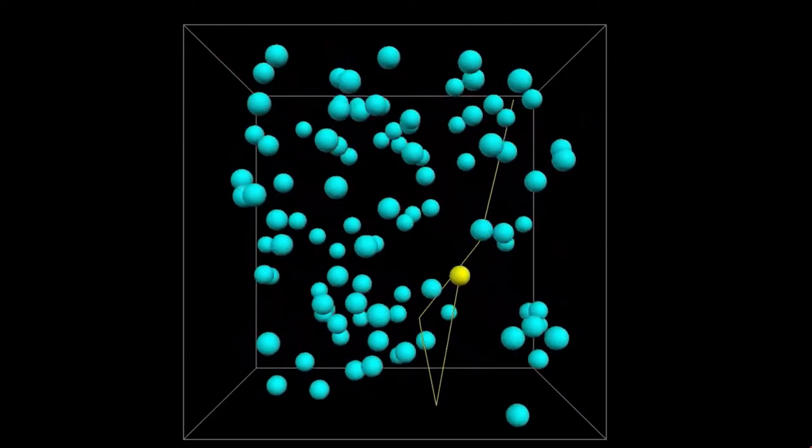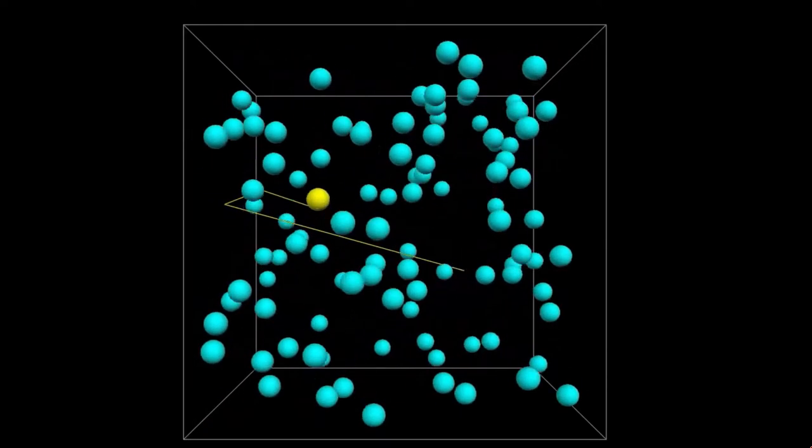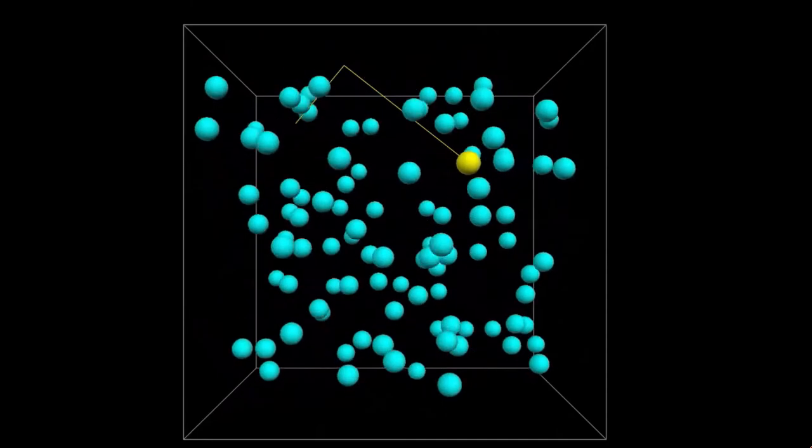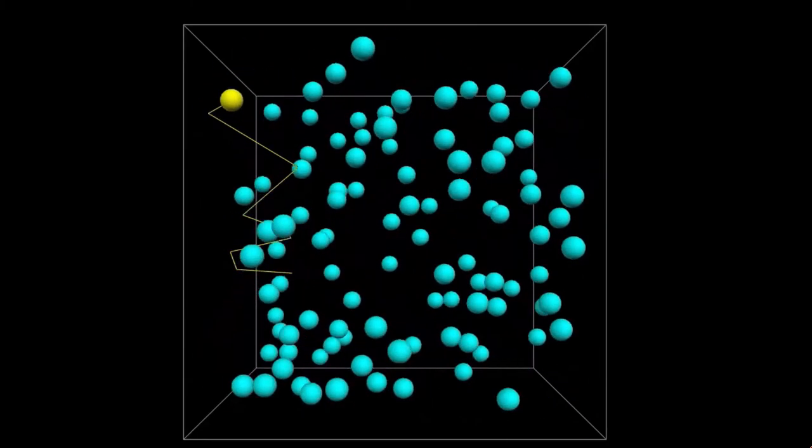In this particular simulation we've put a small number of air molecules inside a box and we've colored one of them in yellow and the yellow one is leaving a trail behind it. And this shows you the sort of path that the molecules are doing. They're bouncing around, constantly colliding with other things, changing their speed and direction.